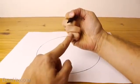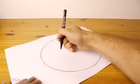To draw a medium sized circle we'll do exactly the same but we'll pivot the page on one of our knuckles, just like this.